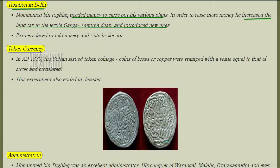Then came taxation issues. Muhammad bin Tughlaq needed money to carry out his various plans. To raise funds, he raised the land tax in the fertile Ganga-Yamuna Doab and introduced new taxes. Farmers faced great misery as a result and riots broke out.